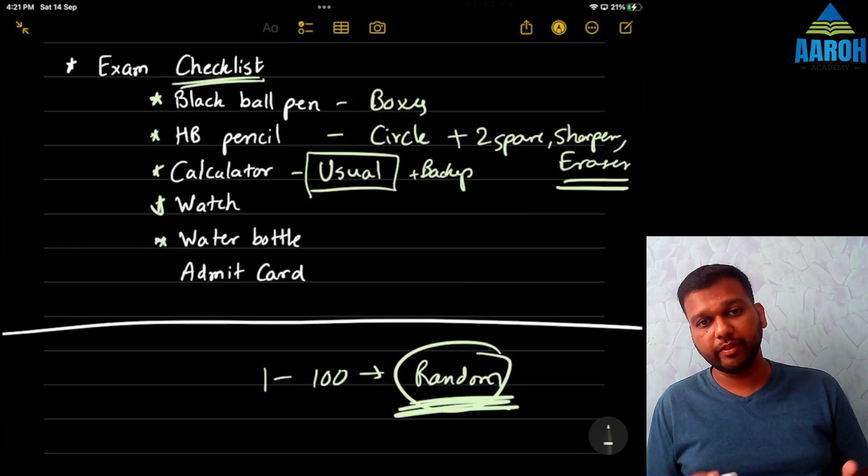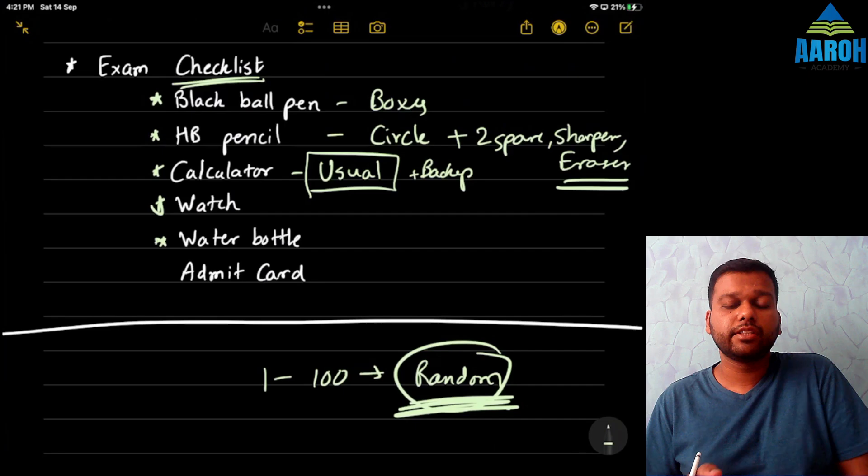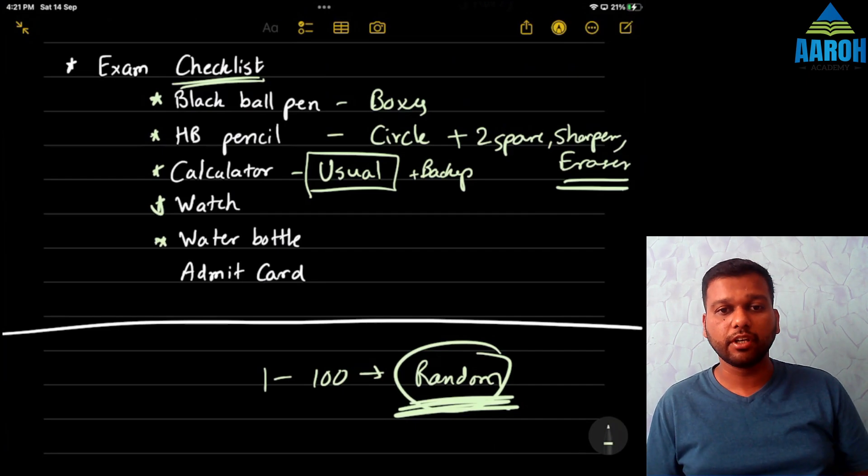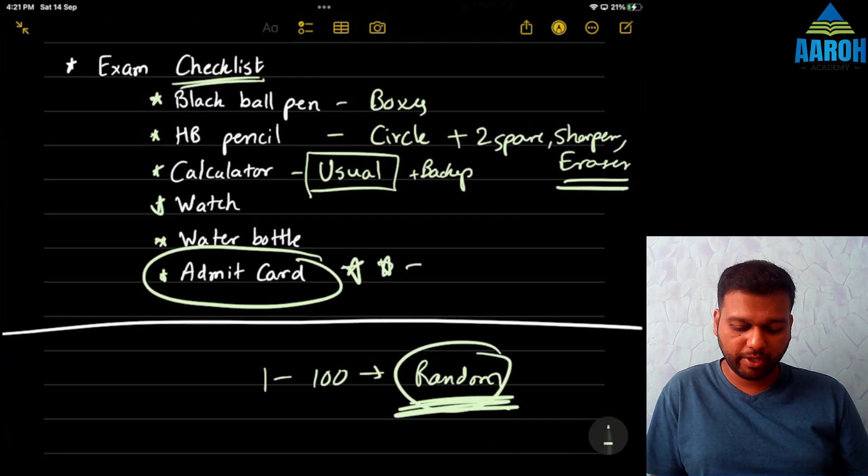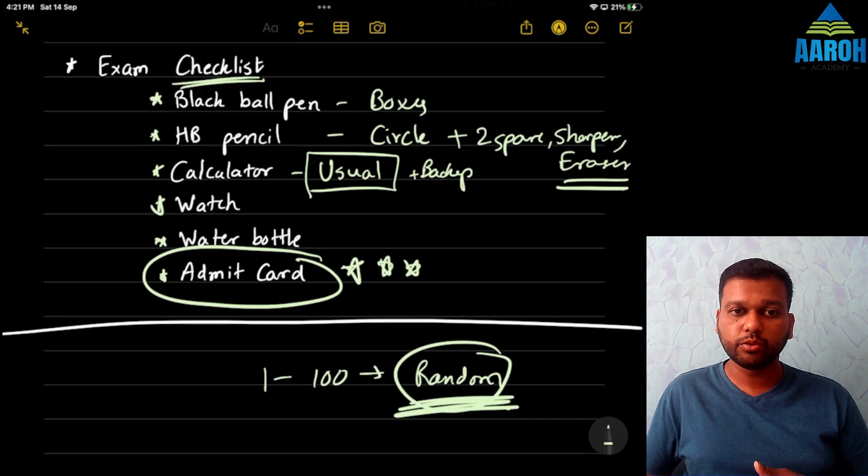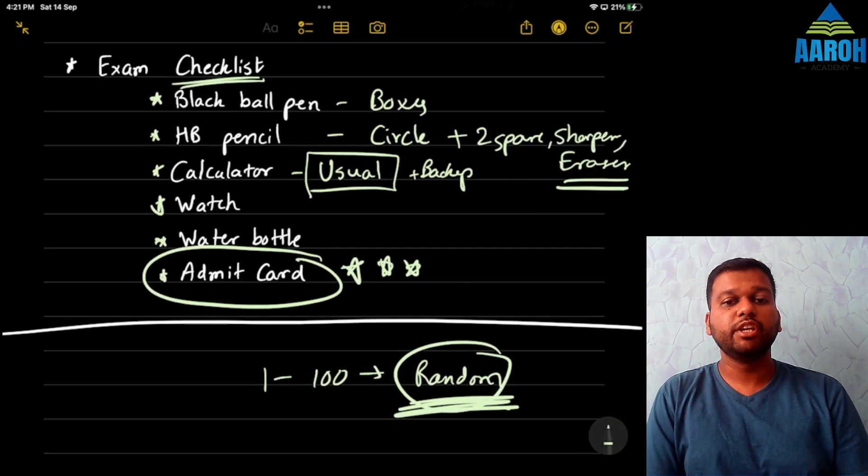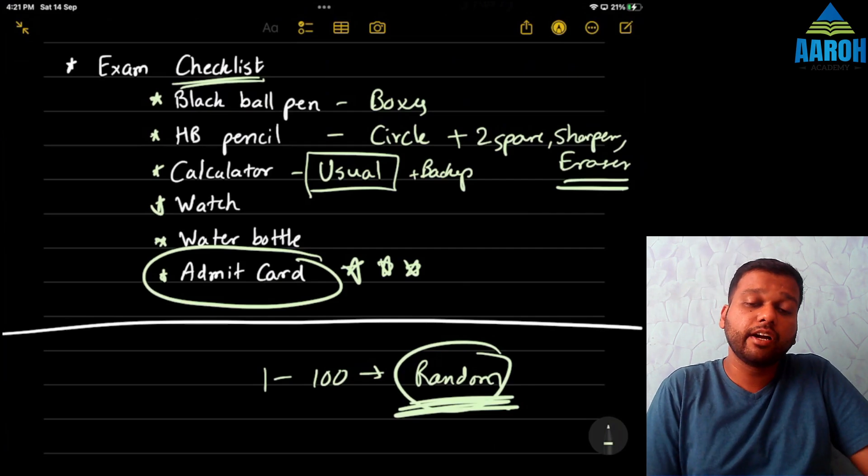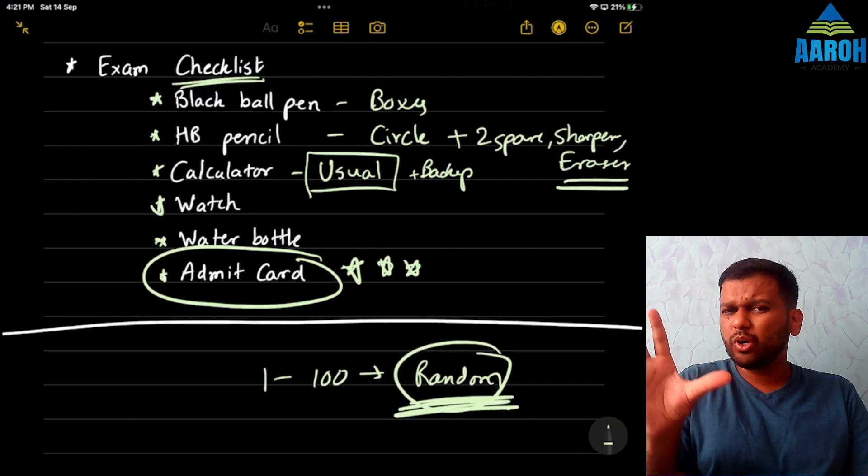Water bottle is must, obviously. Because obviously you might need it. And second is, you should not waste time in searching for it from someone else. Admit card is, like that, this is like the most primary requirement. I have seen, personally seen a couple of students who did not take their admit card in exam and then they had to keep on proving their identity using other card or license or something. So don't waste time. So all this is important.